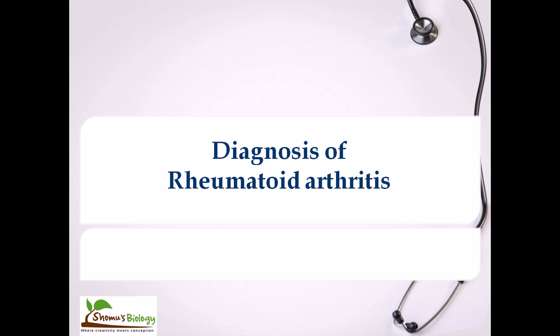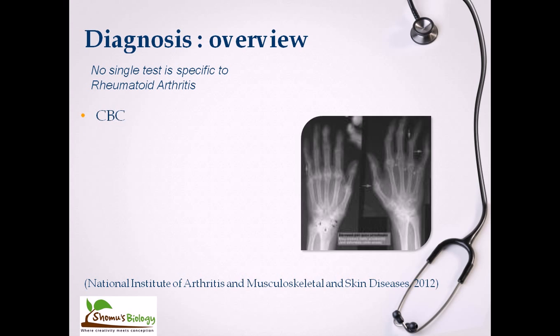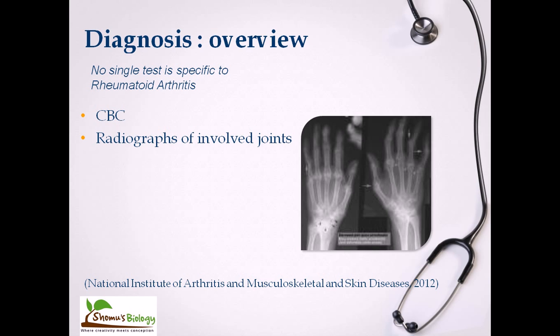For diagnosis, we need to rely on mechanical techniques, certain staining, and chemical processes. The overview of diagnosis consists of several things: CBC, which is the complete blood count of the body — very interesting because there are differences between rheumatoid arthritis and osteoarthritis. In rheumatoid arthritis there are certain problems with our immune system and circulation. We can also look at radiographs of involved joints, X-rays, CT or MRI scans of soft tissue.